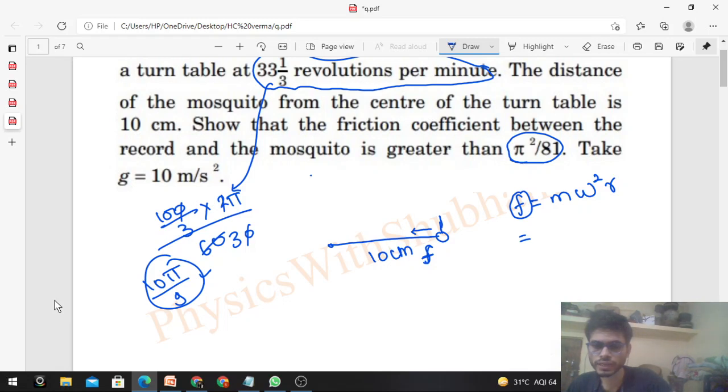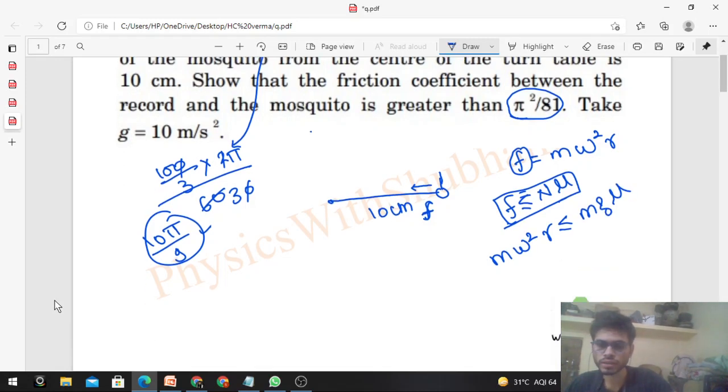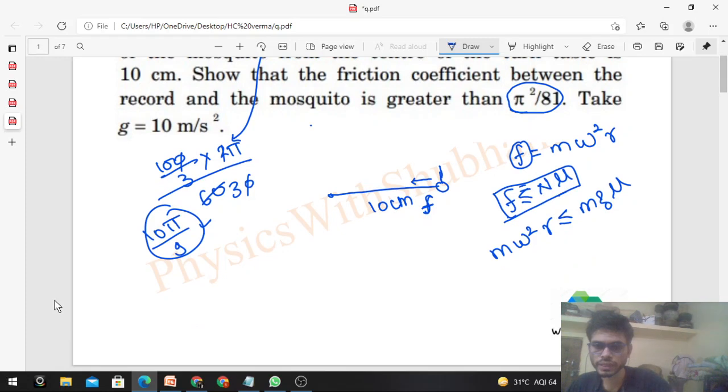This will always be less than or equal to the limiting friction: normal times μ, the limiting value of static friction. So m times omega squared times r will always be less than or equal to N, which is mg times μ. When the mosquito is sitting, you can balance the force in the vertical direction.